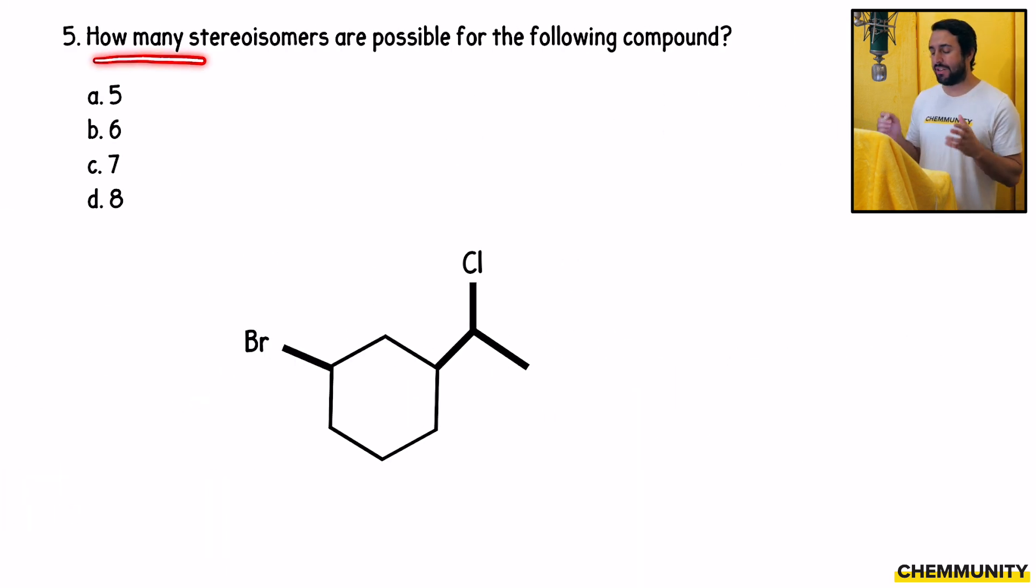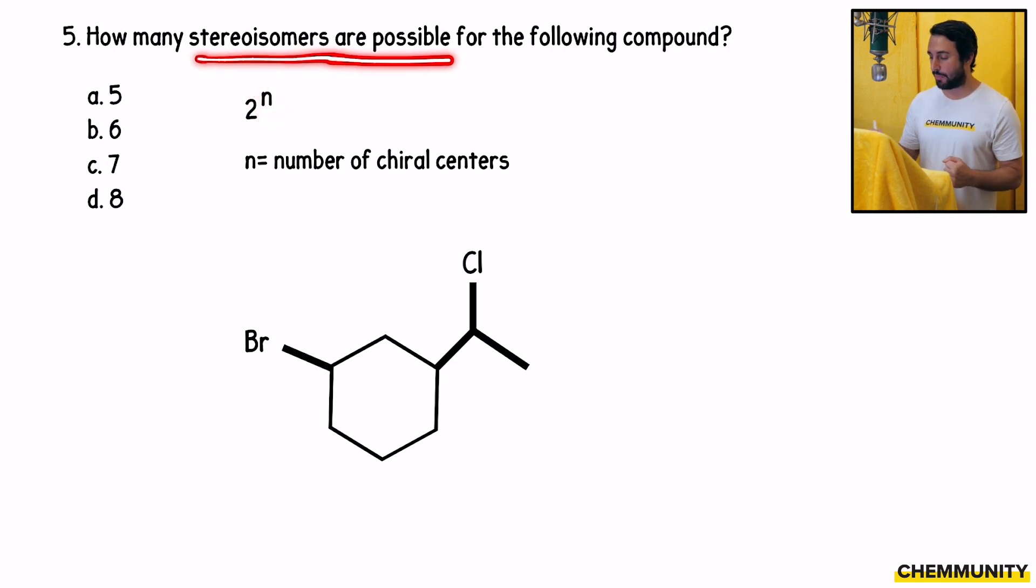5 asks, how many stereoisomers are possible for the following compound? We need to understand that this depends on how many stereocenters there are on the compound. For example, if you have one chiral center, that chiral center can be R or it can be S. And then if you have two chiral centers, now we have more possibilities. So what the formula is, is 2 to the N. The number of chiral centers N, you take 2 and raise it to that power, and that's how many stereoisomers are possible. How many chiral centers do we have?